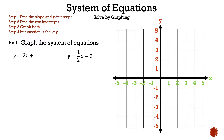Now let's read the question. Graph the system of equations where we have y is equal to 2x plus 1, and y is equal to 1 half x minus 2. Let's graph the first equation, y is equal to 2x plus 1. Let's use the slope and y-intercept method, since the equation is in slope-intercept form. The slope is 2 and the y-intercept is 1. Let's rewrite the slope as 2 over 1, where 2 is the rise and 1 is the run.